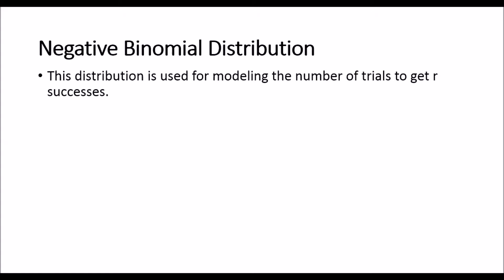The negative binomial distribution is a distribution that is often used for modeling the number of trials to get our R successes. What I mean by this is that we are modeling the number of trials until we observe the R-th success.